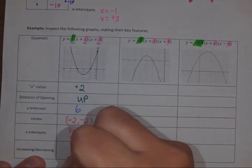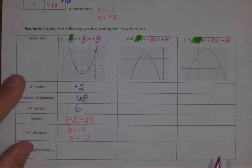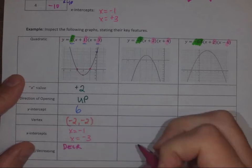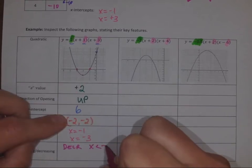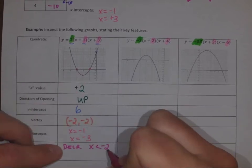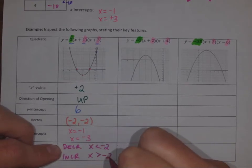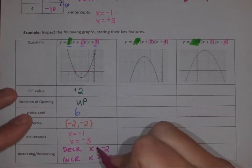So x equals negative one and x equals negative three. Is it increasing or decreasing from left to right? It goes downhill first, so it's decreasing when x is less than negative two, and then it goes uphill — it's increasing when x is greater than negative two.